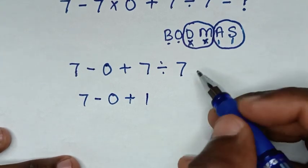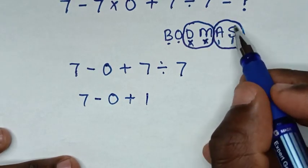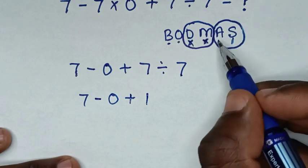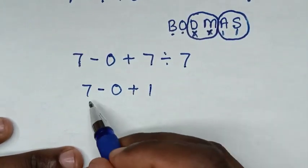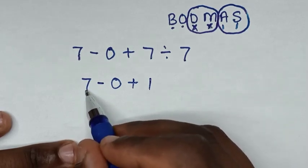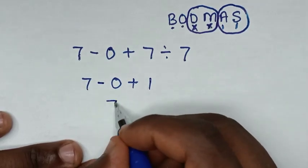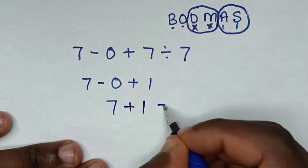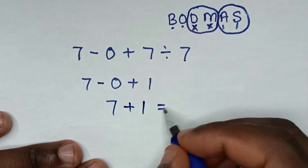Now we deal with addition and subtraction, whichever starts first. Subtraction starts first, so 7 - 0 = 7. Then plus 1, equals 7 + 1 = 8.